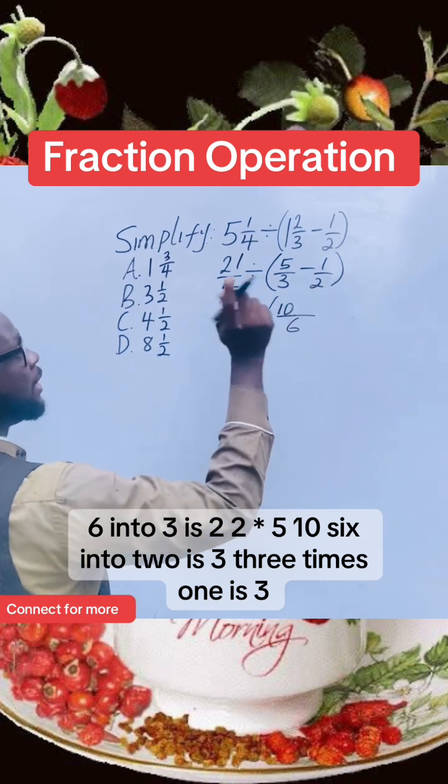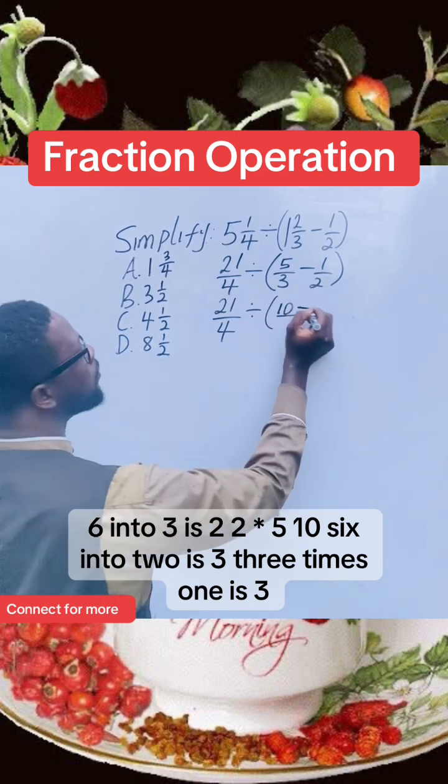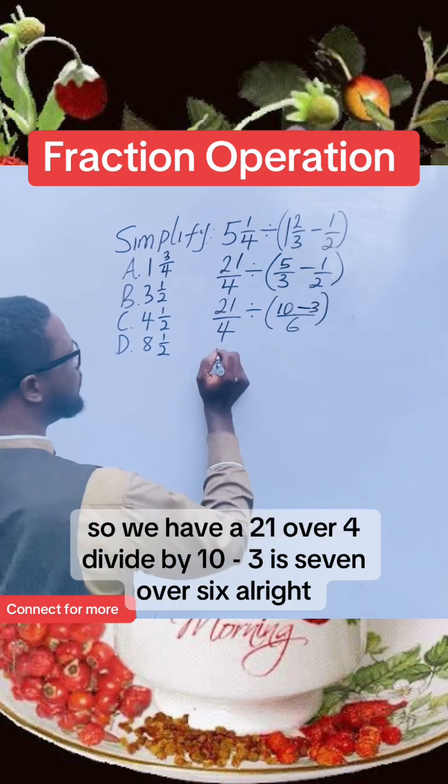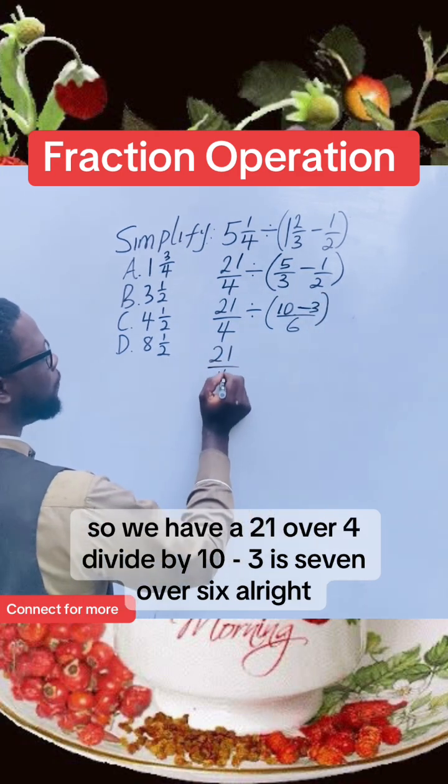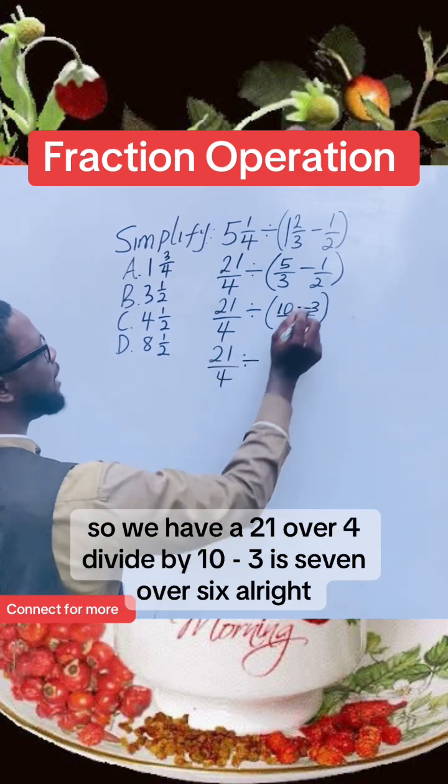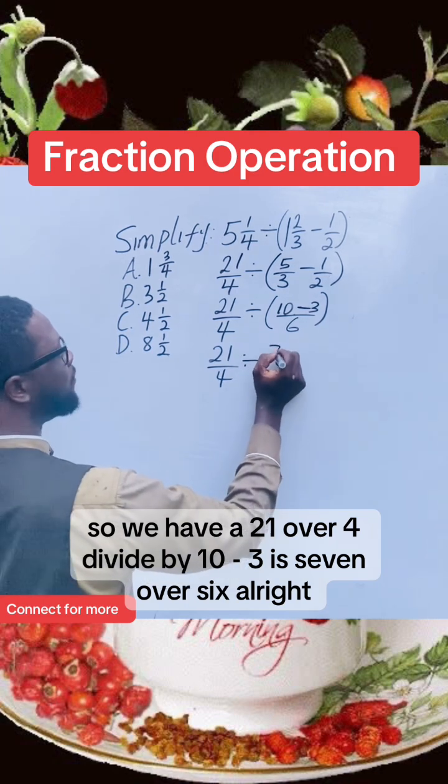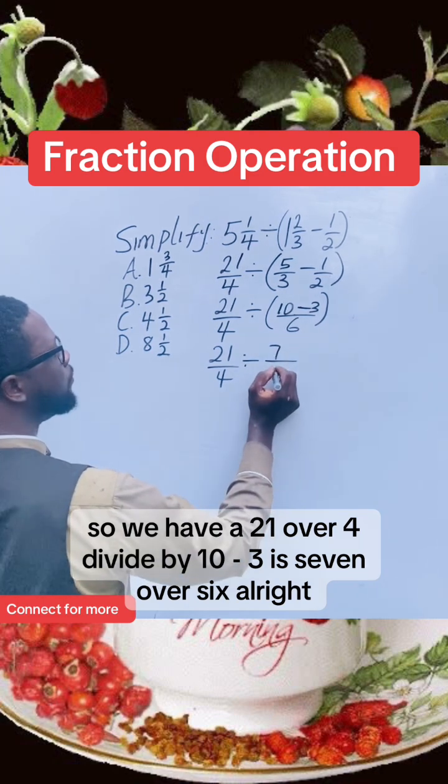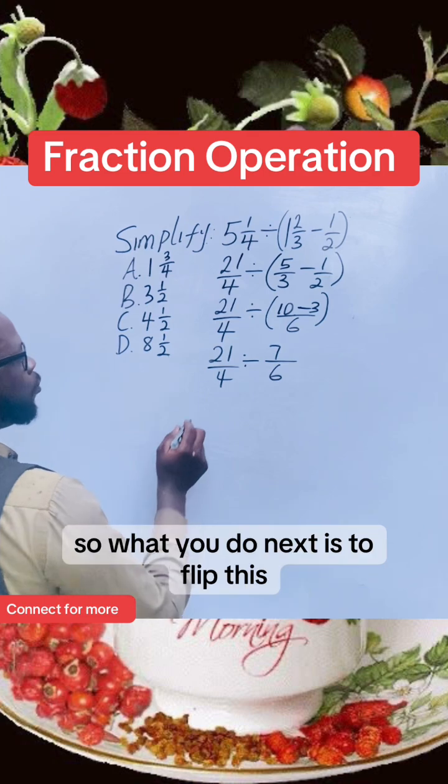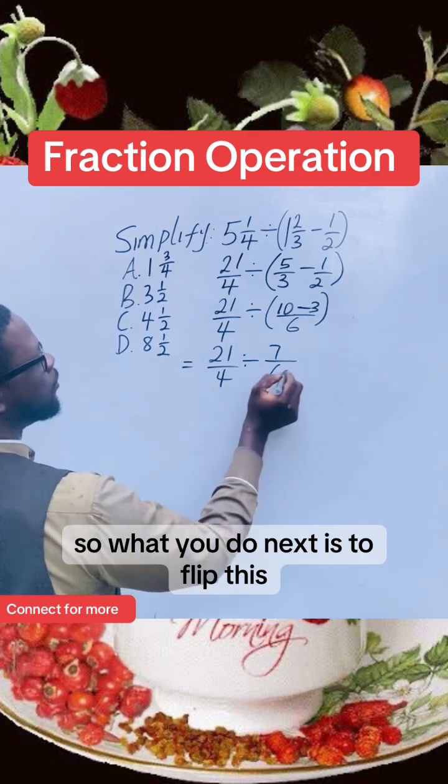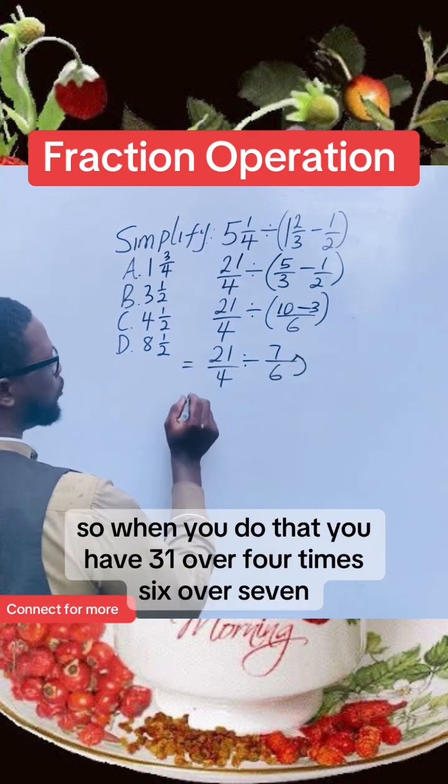So we have 21/4 divided by ten minus three is 7/6. All right, so what you do next is to flip this. So when you do that, you have 21/4 times 6/7.